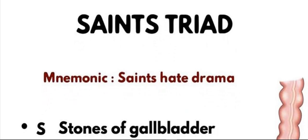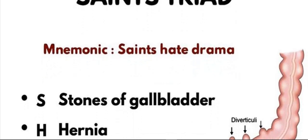First, S stands for Stones of the gallbladder. It is the first part of Saint's Triad, in which different types of cholesterol stones or pigment stones are present in the gallbladder. Next, H stands for Hernia. This may be different types of hernia on different parts of the body, and it is the second part of Saint's Triad.